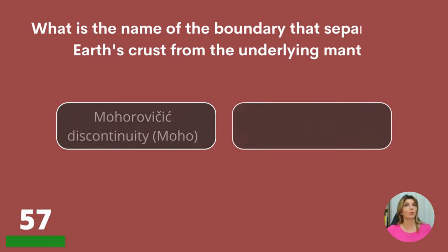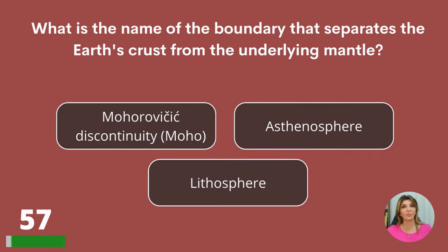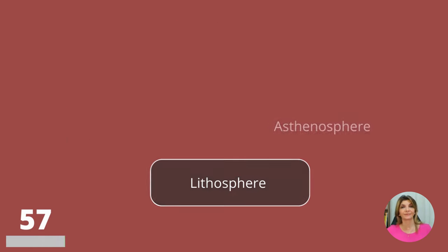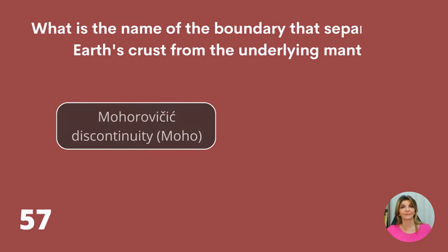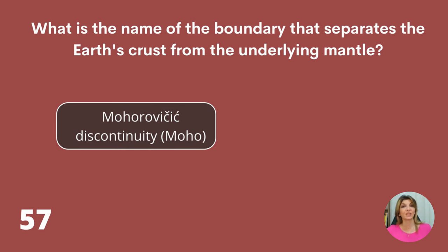What is the name of the boundary that separates the Earth's crust from the underlying mantle? The Moho, asthenosphere, or the lithosphere? The Moho discontinuity.